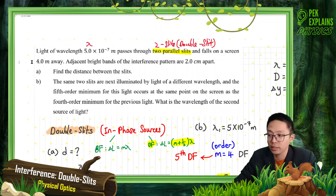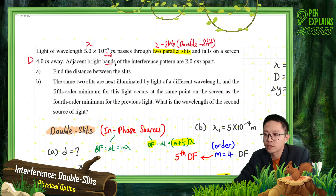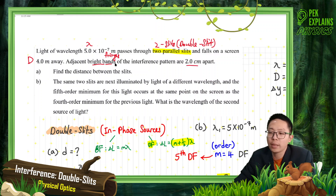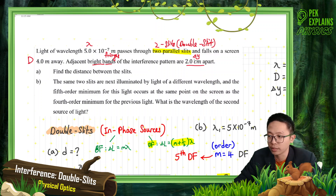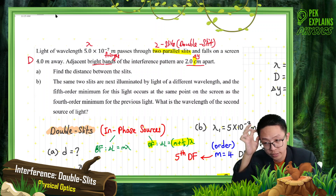The screen is 4 meters away — away from the slit. So that is the big D = 4 meters. Adjacent bright bands — bands means fringes — so we're talking about the bright fringe. Adjacent bright fringes are 2 cm apart. That means this is the ΔY. Be careful: cm needs to be changed to meters. You must change all values to SI units.